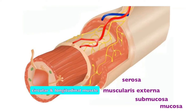The muscularis externa generally has two layers — we'll see three in the stomach. There is an inner layer of circular muscle running the circumference of the tube, which squeezes the digestive tract, and an outer layer of longitudinal muscle running the length of the GI tract, which shortens when it contracts. Collectively, circular and longitudinal muscle drive the movement of substances through the GI tract in a process called peristalsis.